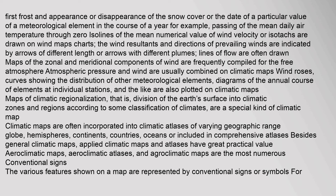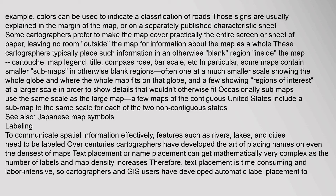The various features shown on a map are represented by conventional signs or symbols. For example, colors can be used to indicate a classification of roads. Those signs are usually explained in the margin of the map, or on a separately published characteristic sheet. Some cartographers prefer to make the map cover practically the entire screen or sheet of paper, leaving no room outside the map for information about the map as a whole. These cartographers typically place such information — cartouche, map legend, title, compass rose, bar scale, etc. — in an otherwise blank region inside the map. Some maps contain smaller sub-maps in otherwise blank regions, often one at a much smaller scale showing the whole globe.